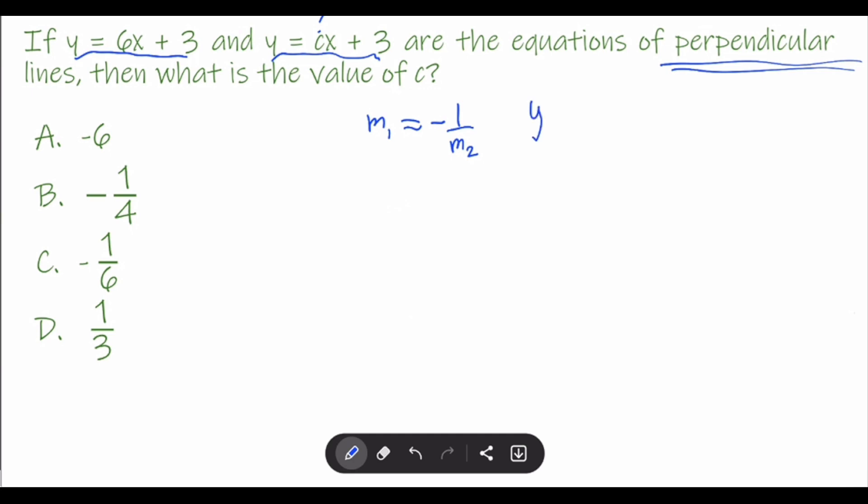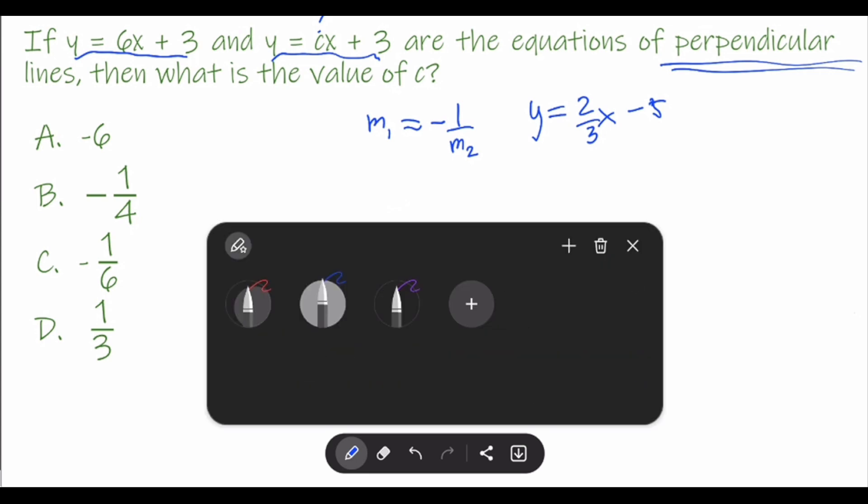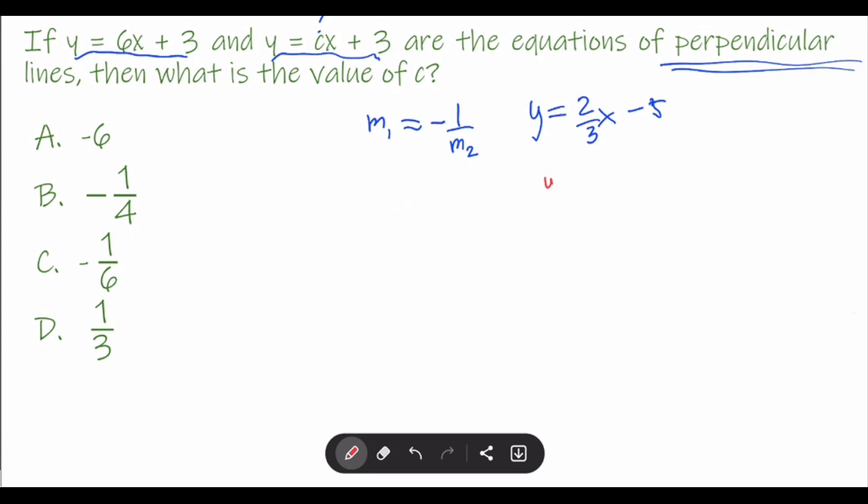For example, let's say we have an equation y = 2/3x - 5. The perpendicular line for this—there are many possible perpendicular lines, but as long as the slope is the reciprocal and negative of this.